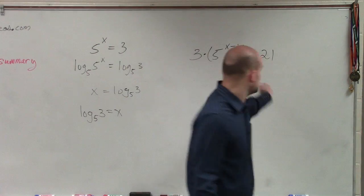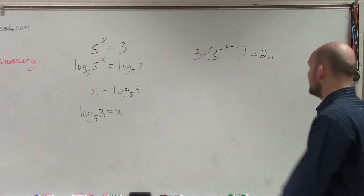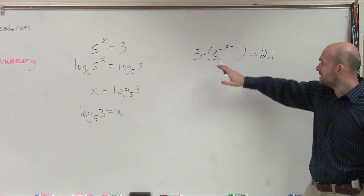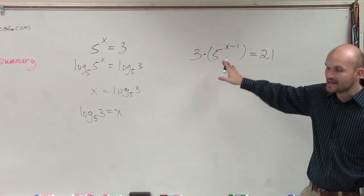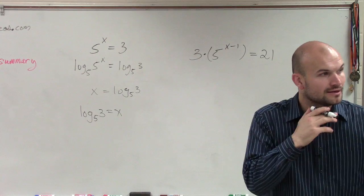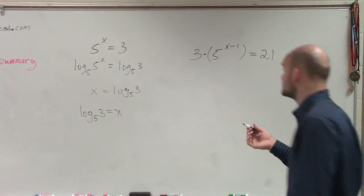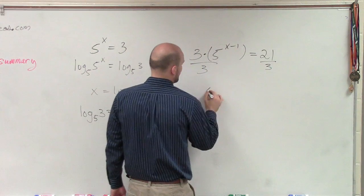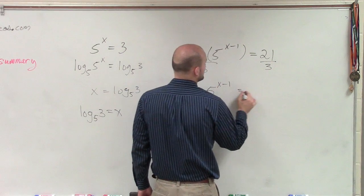So ladies and gentlemen, we will look at the problem that we have right here. And you say, all right, that's not anywhere close to what that looks like. We have this whole exponent being multiplied by 3. So the first thing we want to do is isolate it. So let's divide by 3. So therefore, I have 5 to the x minus 1 equals 7.